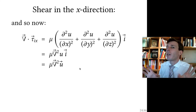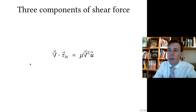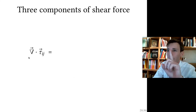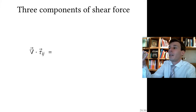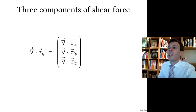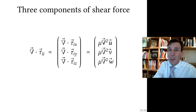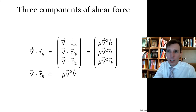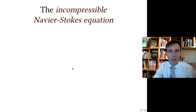Doing the same in Y and Z directions, the divergence of the shear tensor — the vector field showing where shear acts on fluid particles — has three components, each equal to the Laplacian of the corresponding velocity component. This sums up to one clean expression: the divergence of shear equals viscosity multiplied by the Laplacian of velocity. We're done.